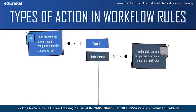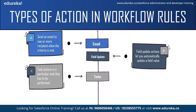The next action is task. Task actions determine the details of an assignment given to a specific user by an automated process. You can send a notification email to the assignee when a task is automatically created. For example, if an opportunity is closing in a few days and its amount is very high, you can automate this action. Note that tasks should only be assigned to roles with a single user; if more than one user is assigned to a role, the task is automatically assigned to the user who triggered the workflow rule.